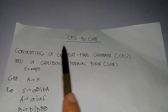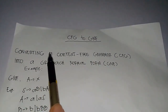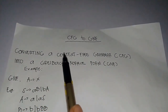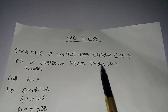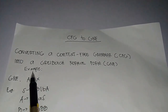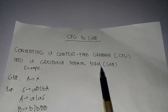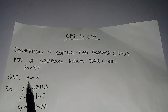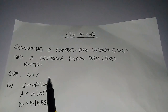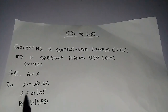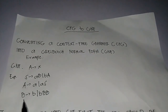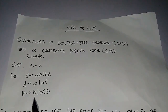CFG to GNF. Converting a context-free grammar into CNF form. Example of CNF: D implies H. A implies EB or EE. D implies EE or EN. D implies BB, E, E.